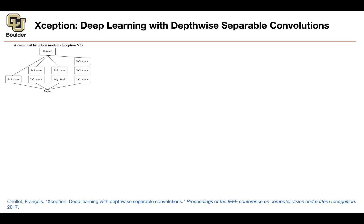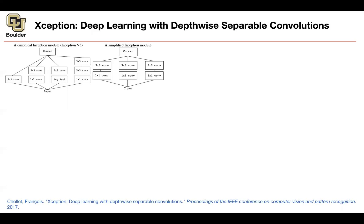We know about Inception — we covered it in class for GoogLeNet. The paper says let's simplify that architecture. I don't like the fact that you do 1x1 convolution, average pooling, 3x3 convolutions, 5x5 convolutions, 7x7. I don't like that. Let's simplify stuff. Let's use only 1x1 and 3x3 convolutions. So it's a simplified Inception module.